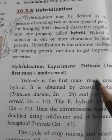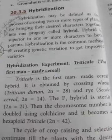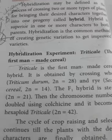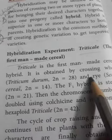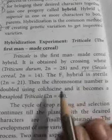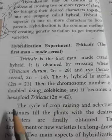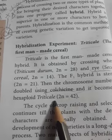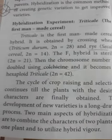One hybridization example is Triticale, which is the first man-made cereal hybrid. It is obtained by crossing wheat (scientific name Triticum durum) and rye. The F1 hybrid is sterile, then the chromosome number is doubled by using colchicine — a polyploid chemical — and it becomes a hexaploid Triticale, where 2N equals 42 (6X). The cycle of crop raising and selection continues until plants with the desired characters are finally obtained.